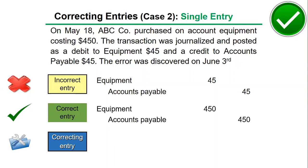You can pause the video to test your knowledge and make the correcting entry. The correcting entry, when combined with the incorrect entry, should lead to the correct entry. We need to see the difference: we add to equipment $450 minus $45, which equals $405 debit, and also accounts payable credit $405. Combining the correcting entry with the incorrect entry gives us the correct entry.